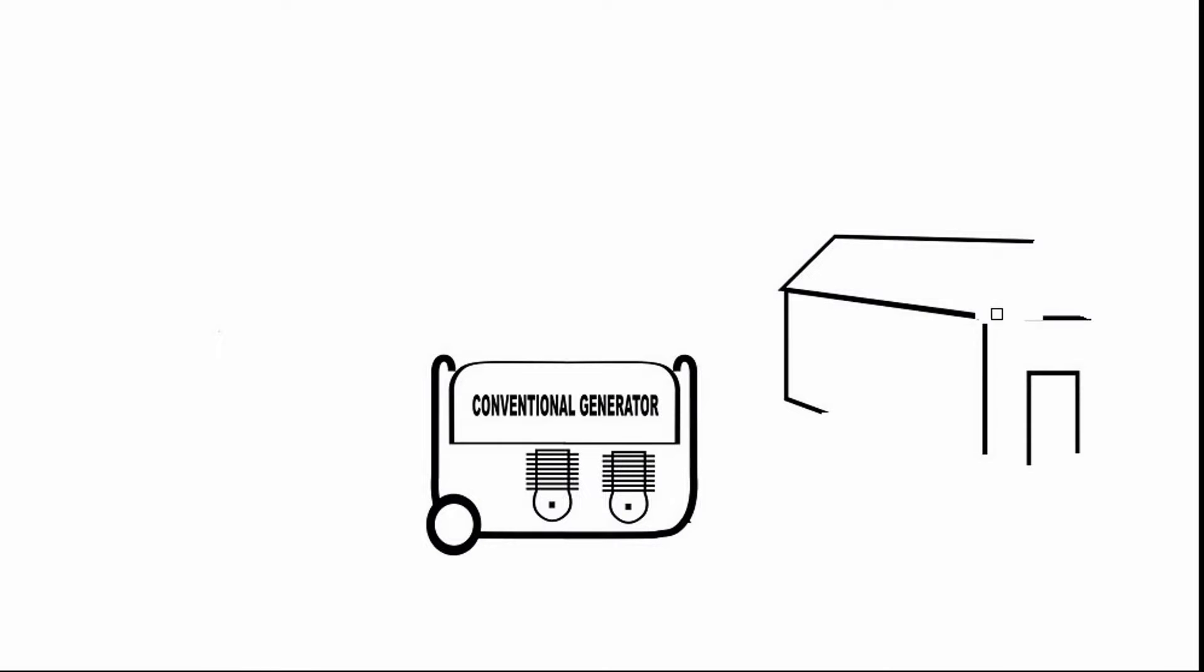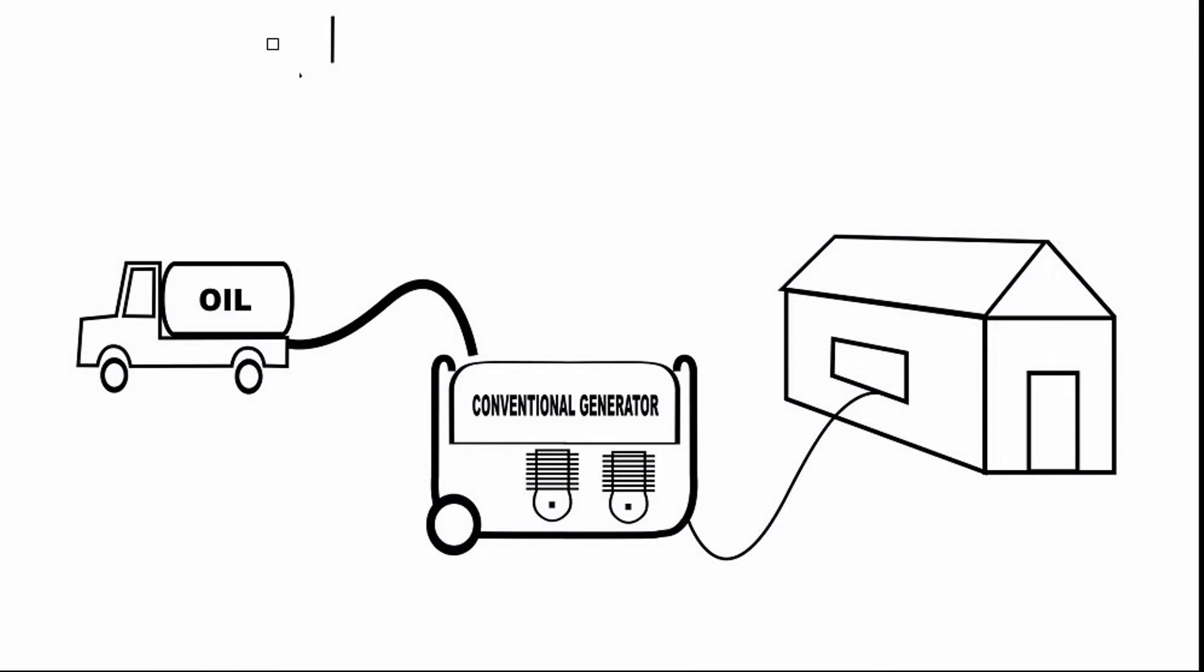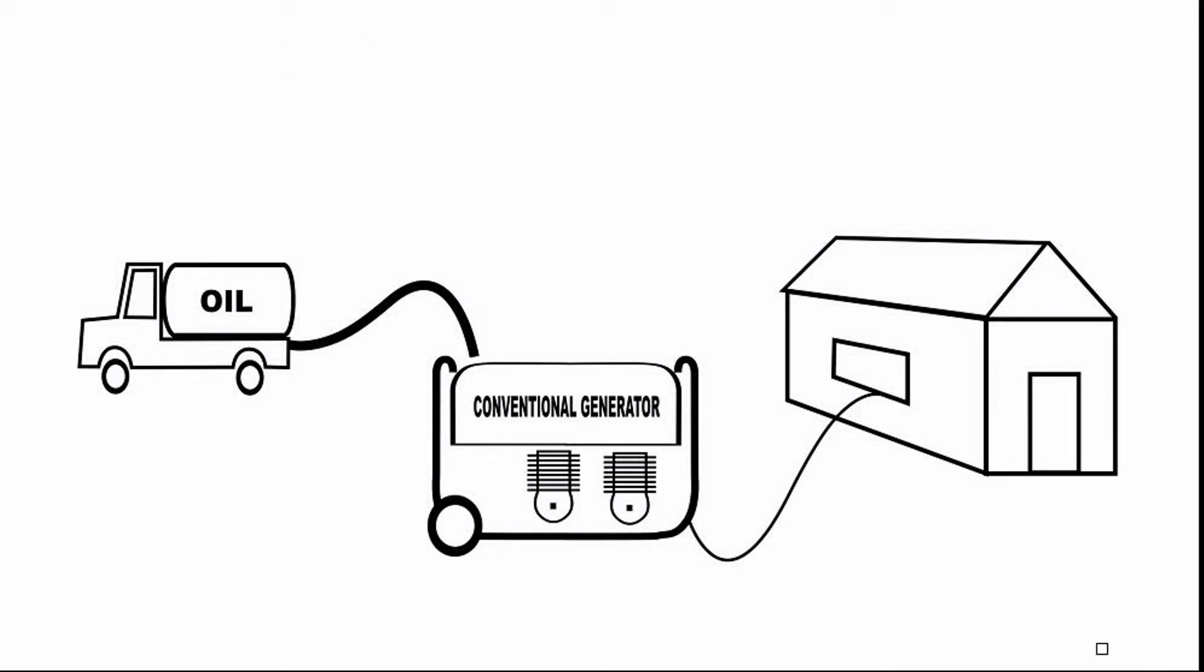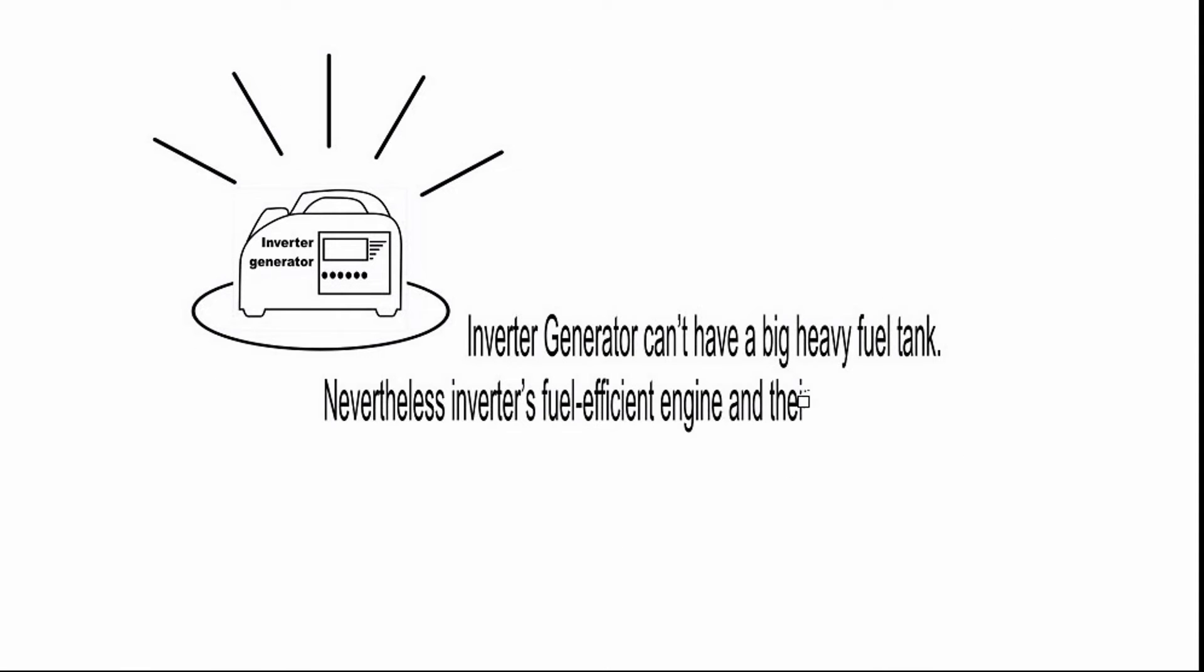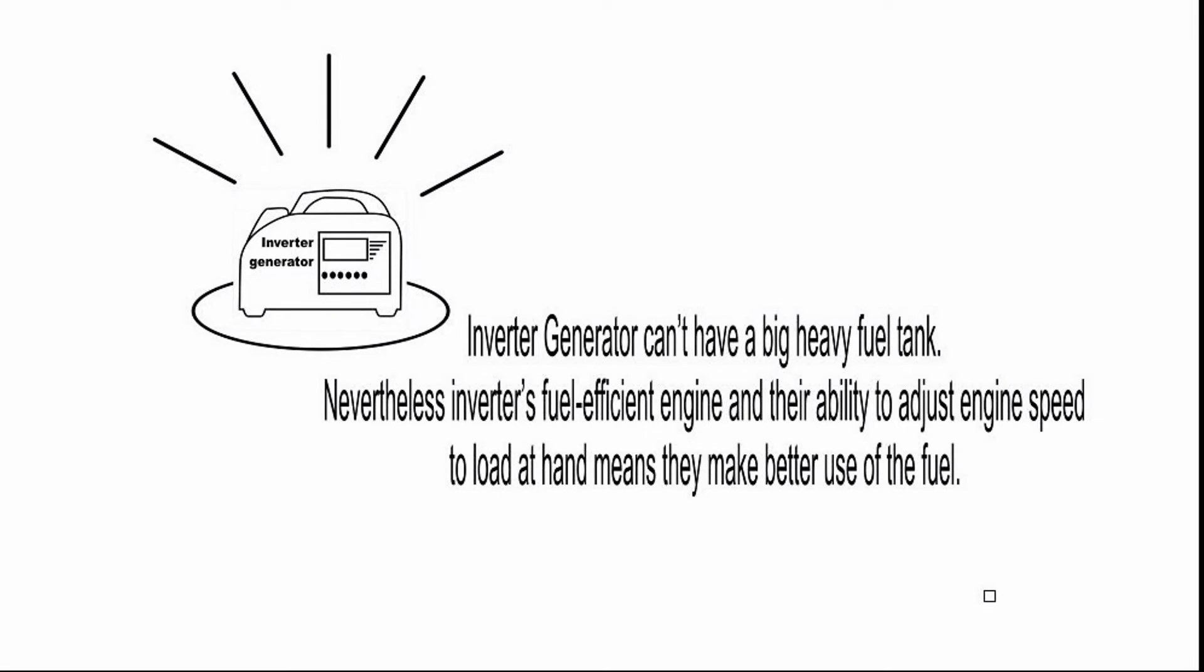Conventional generators are often designed to generate power where it is needed and to keep the power on. Conventional designs have sizable fuel tanks with relatively long run times. Inverters on the other hand are designed to be compact and lightweight. Inverters' fuel efficient engines and their ability to adjust engine speed to the load make better use of the fuel.